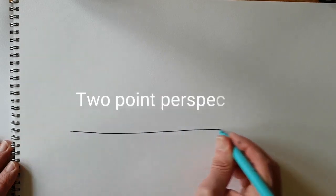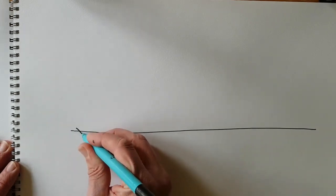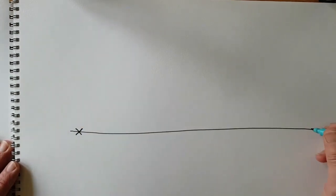With two point perspective once again you start off with the eye line. Once again you don't need to use a ruler you can if you want to but it's not necessary. Now with two point perspective as the name suggests there are two vanishing points and I'm going to put them either end of the eye line.